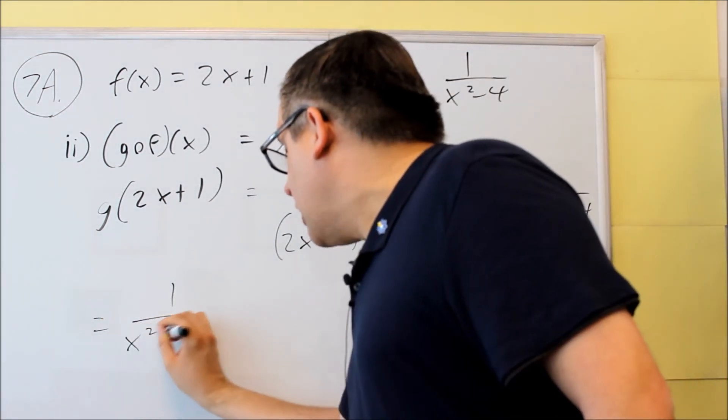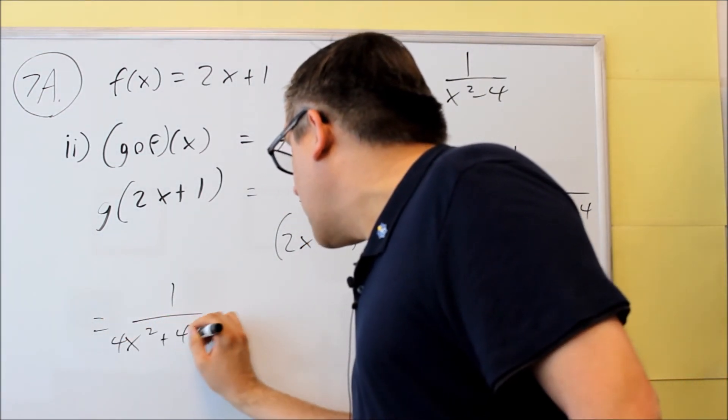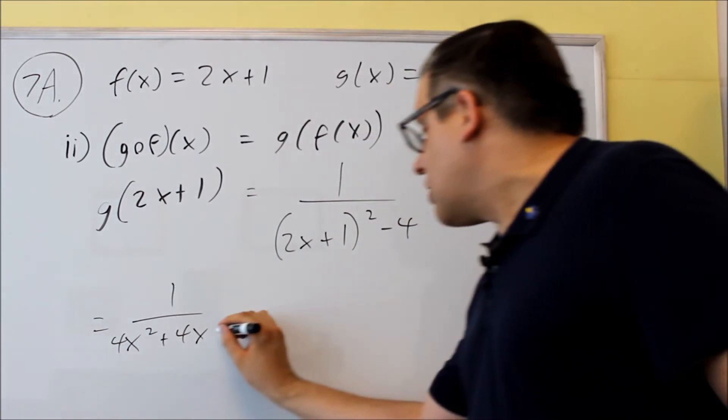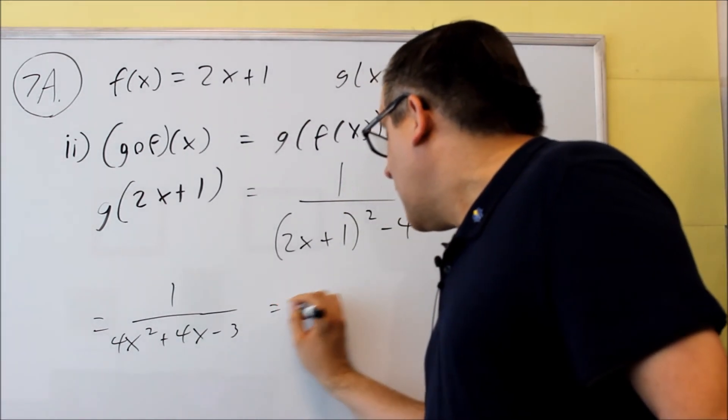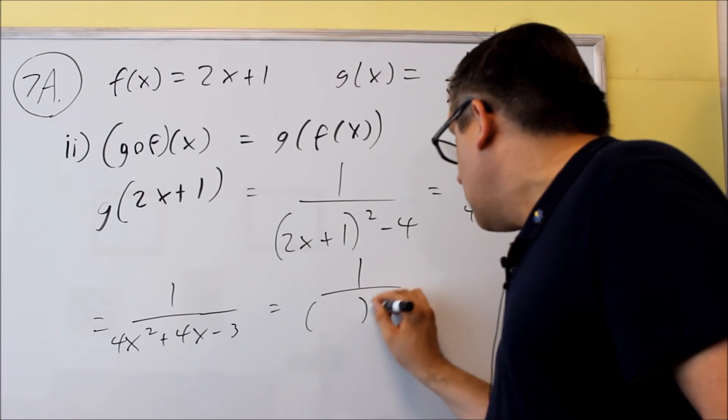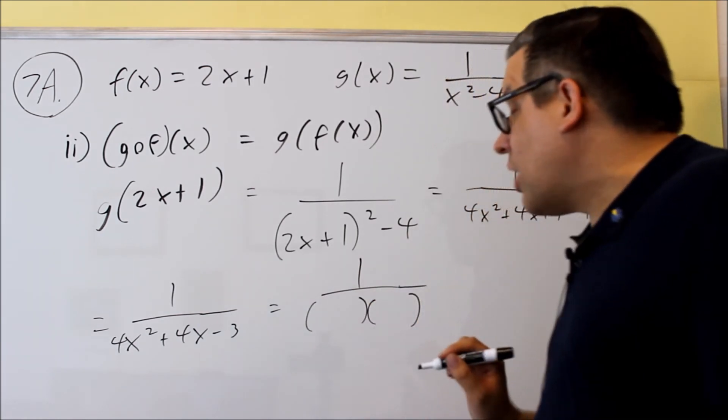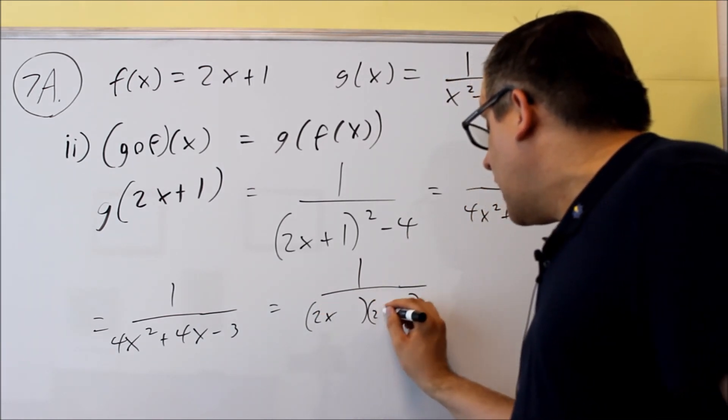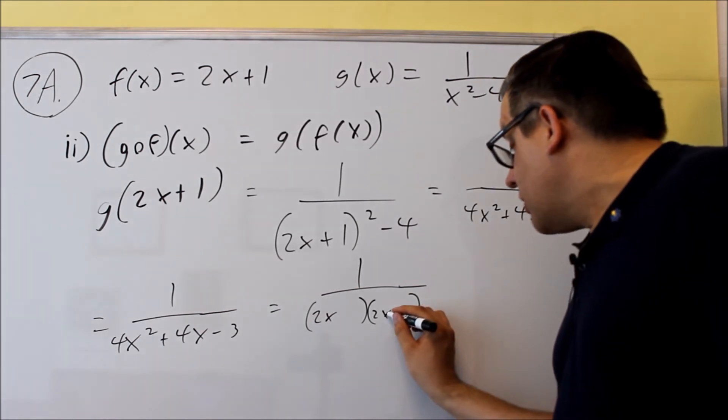That's going to be 1 over 4x squared, plus 4x. And then this will have a minus 3. I want to factor it, if possible. So let's try and factor this one. I can do 2x and 2x.